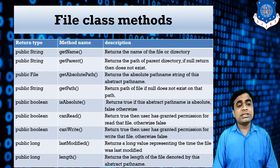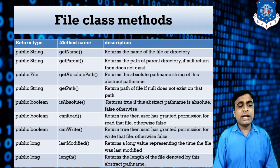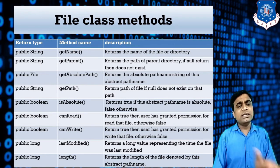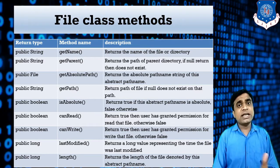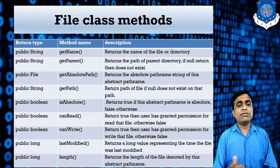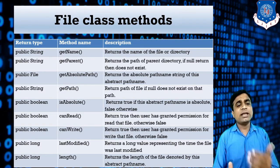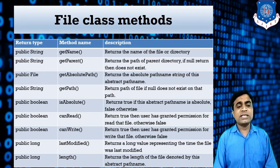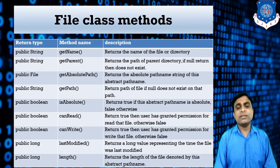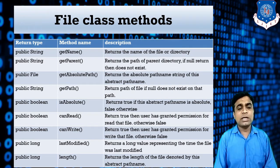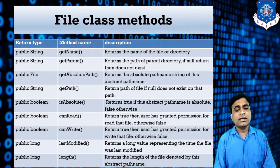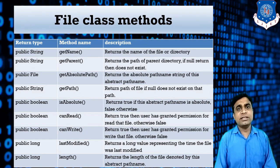isAbsolute() returns a boolean indicating whether a particular path is absolute or not. We can also check different properties of the file — for example, canRead() returns true if the user has read permission for that file, otherwise false. Similarly, canWrite() checks write permission. lastModified() returns the last modification time as a long integer value, not as a date object.